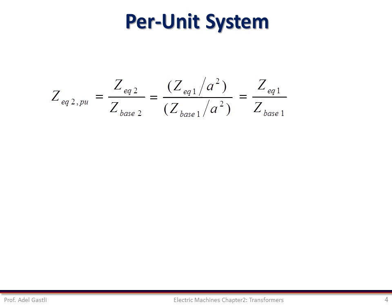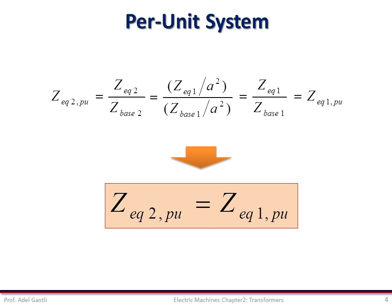we obtain the ratio Z_equivalent 1 over Z_base 1, which is actually Z_equivalent 1 in per unit. Therefore, the per unit impedance is the same referred to either side of the transformer.